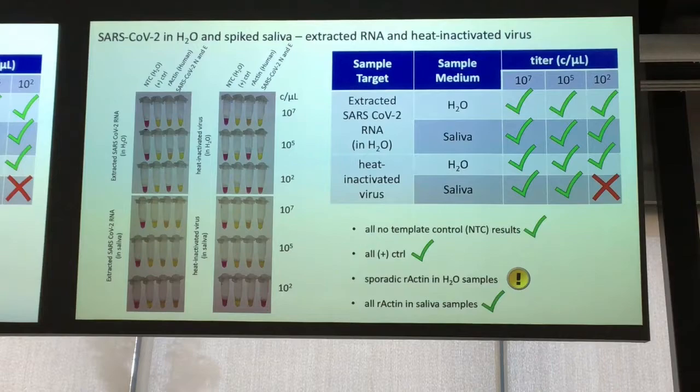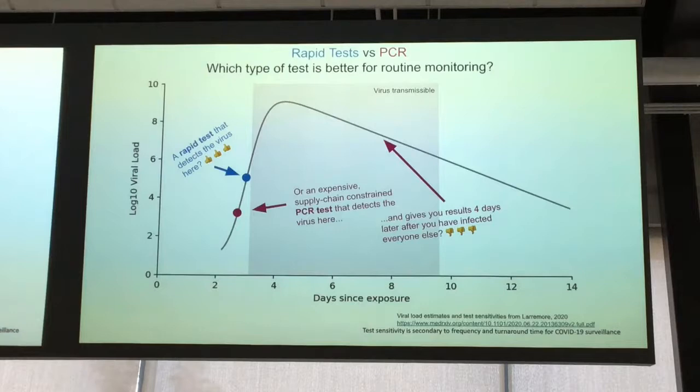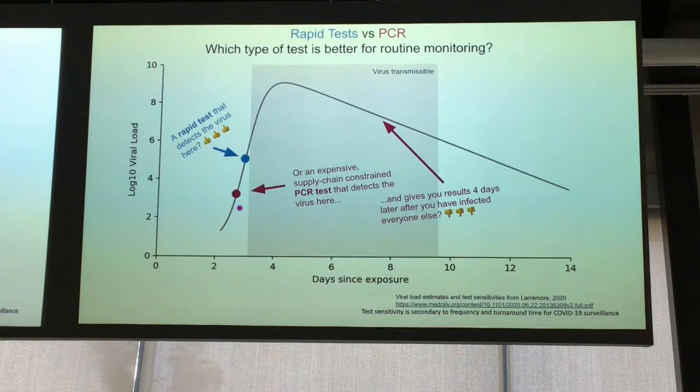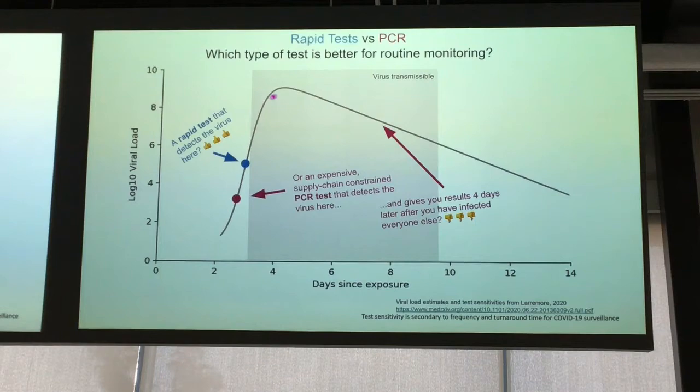The LAMP test detects at 10 to the 5 copies per mL really well, and doesn't detect below 10 to the 3 or 10 to the 2. But that's okay — if it's detecting at 10 to the 5, it's good enough to detect all of the transmissible virus. And there's been so much progress recently on LAMP research because it's so promising — it's getting more and more sensitive, and there are many ways to use it.